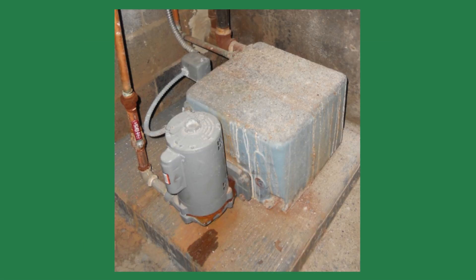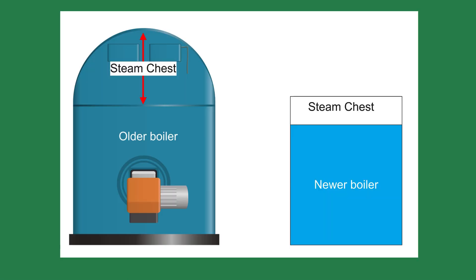Many older boiler plants use the condensate tank to return condensate to the boilers. The old boilers had large steam chests and the water level is not critical. The new boilers have smaller steam chests and the water level is absolutely critical, so a condensate tank will not work with the newer boilers.